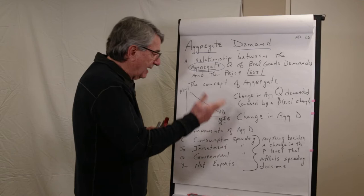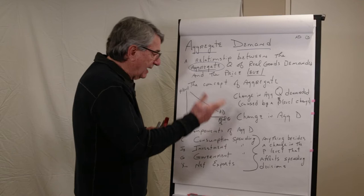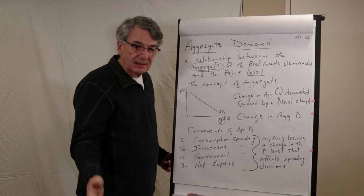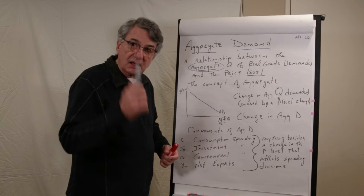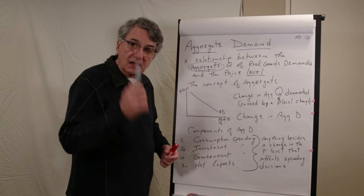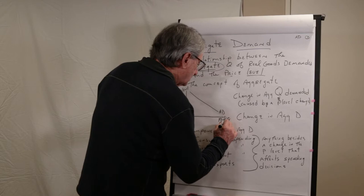So what we do is we can't add units of cars and medical services and units of peaches. So what we do is we convert the quantity demanded to its dollar value in constant dollars. So the real quantity of goods demanded in the economy measured in constant dollars. So we can add the dollar values of each of these goods demanded.